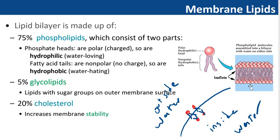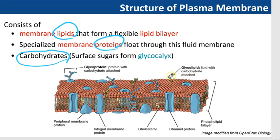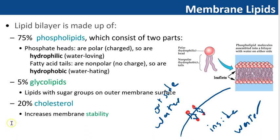The next membrane lipid is glycolipid, which accounts for 5% of membrane lipids. 'Glyco' means sugar, and a glycolipid is a lipid with sugar molecules, which can be found on the outer membrane surface. Looking back at the picture, you can see the glycolipid — a carbohydrate group attached to a lipid. The next membrane lipid is cholesterol, which accounts for 20% of membrane lipids. Its job is to increase membrane stability.